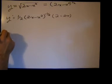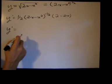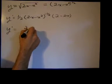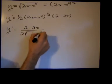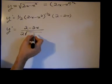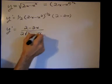So if we wanted to clean that up a little bit, we could say y prime is 2 minus 2x divided by 2 times, and I'm just making that negative one-half to a square root in the denominator, 2x minus x squared.